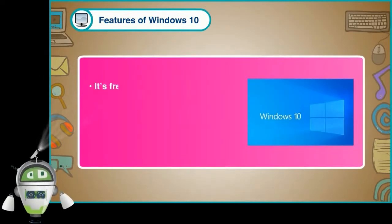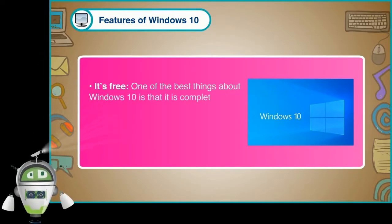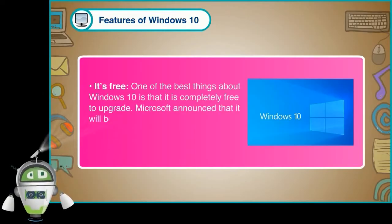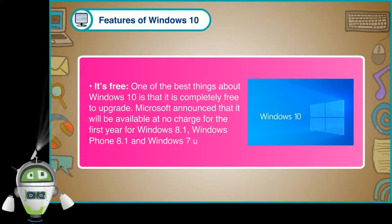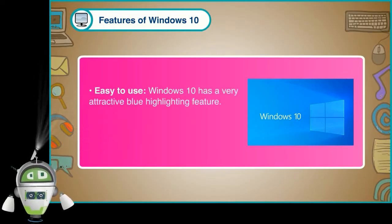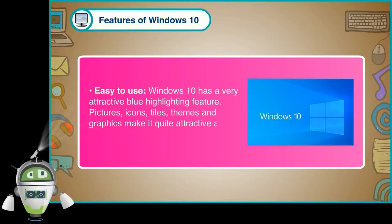It's free. One of the best things about Windows 10 is that it is completely free to upgrade. Microsoft announced that it will be available at no charge for the first year for Windows 8.1, Windows Phone 8.1, and Windows 7 users. Windows 10 has a very attractive blue highlighting feature. Pictures, icons, tiles, themes and graphics make it quite attractive and user-friendly.